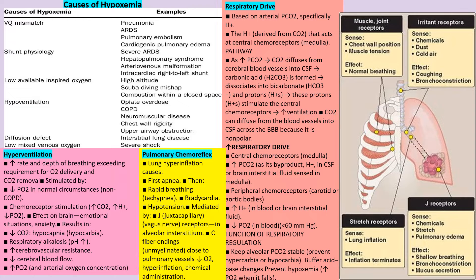Alveolar ventilation equals respiratory rate times (tidal volume minus dead space air volume). It is the amount of gas reaching the functional respiratory units that can undergo gas exchange. Tidal volume is the amount of air breathed in and out — normal value is 500 ml, with 350 ml for alveolar ventilation and 150 ml for dead space. Dead space is the volume of air not participating in gas exchange, typically 150 ml, trapped in the conducting zone (trachea, bronchi, bronchioles). The respiratory zone — respiratory bronchioles and alveoli — is where actual gas exchange happens.